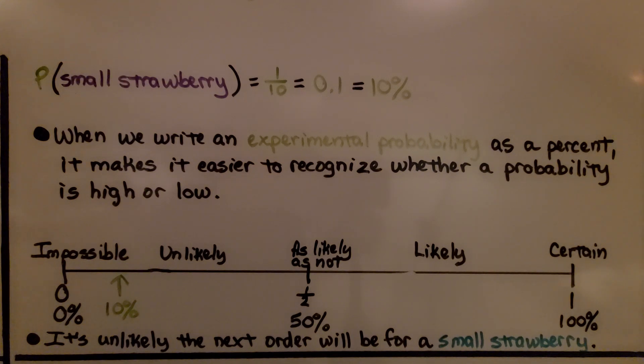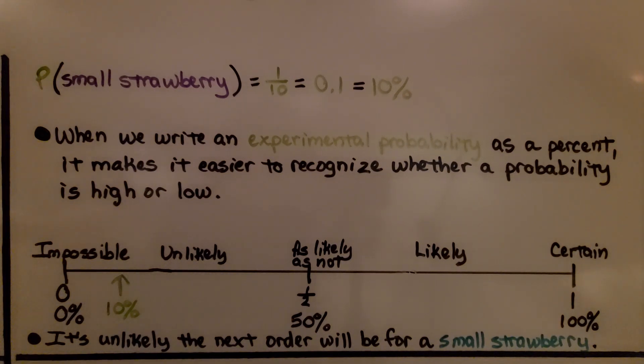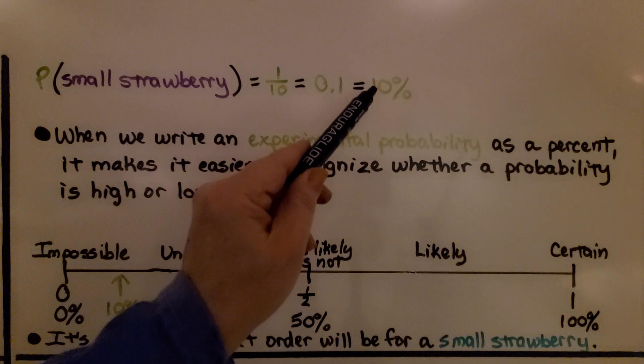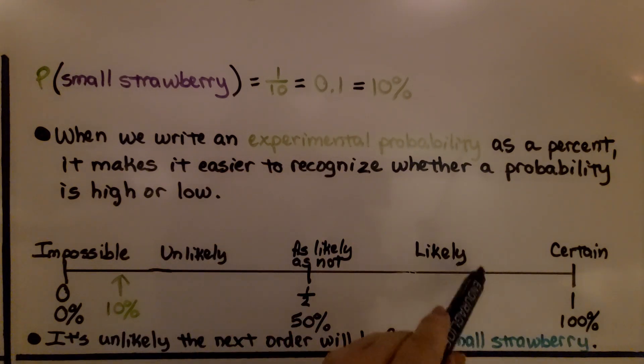When we write an experimental probability as a percent, it makes it easier to recognize whether a probability is high or low. So on our number line, with 0 is impossible and certain is 1 or 100%, 10% would be about right here. Here's 50%, here's 0. So it's unlikely the next order will be for a small strawberry. If the data had shown that it was 80 or 90%, we would know that it would be highly likely that the next order would be for a small strawberry.